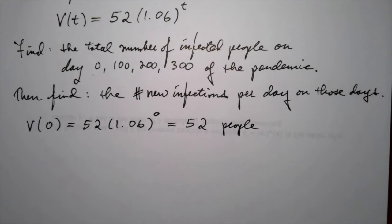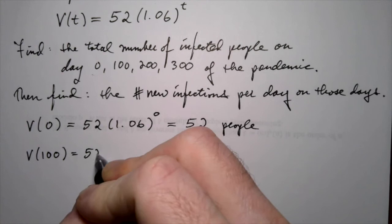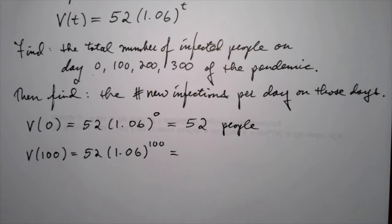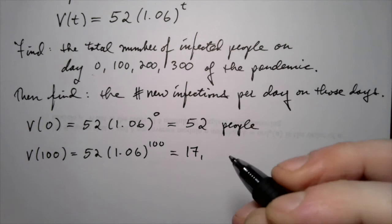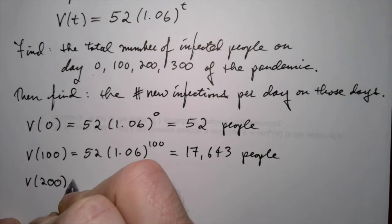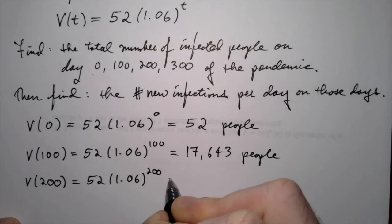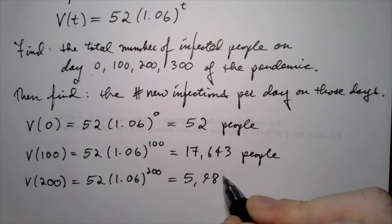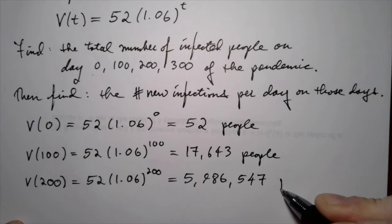Next, plugging in t = 100: 52 times 1.06 to the 100, which gives about 17,643 infected people. For t = 200, we get approximately 5,986,547. This thing is really spreading.